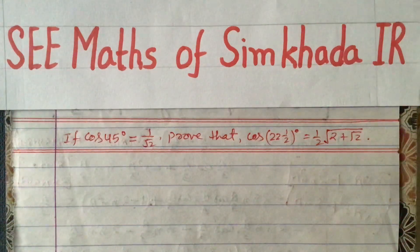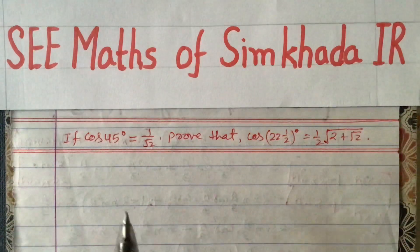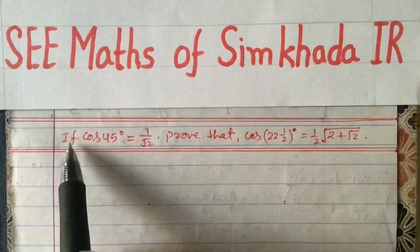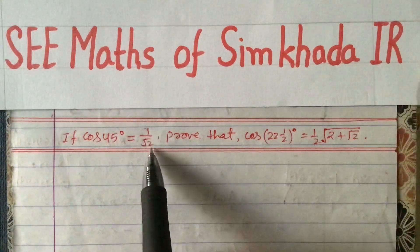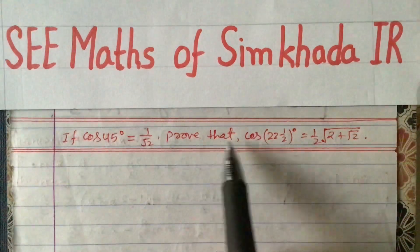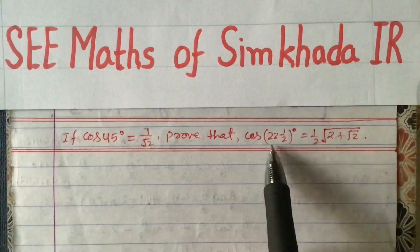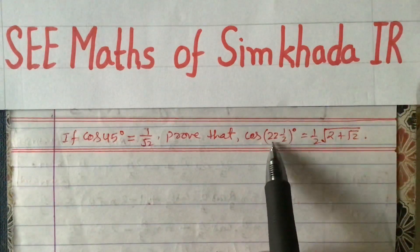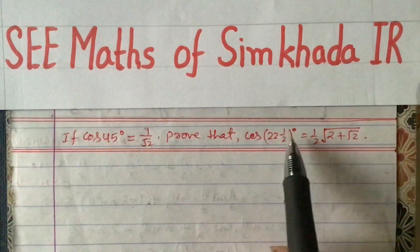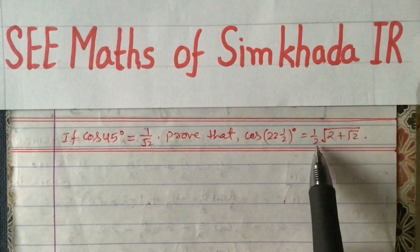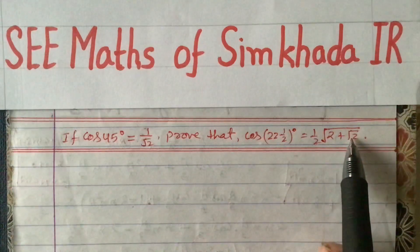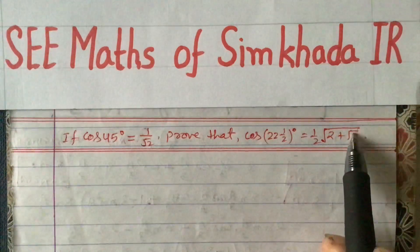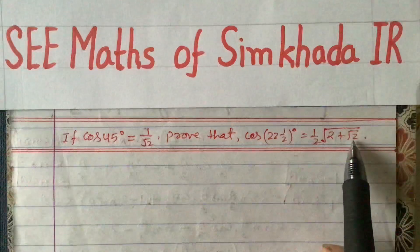Dear students, today I am going to teach you one question related to multiple and submultiple angles. The question is: if cos 45° equals 1/√2, prove that cos(22½°), that is 22.5°, equals (1/2)√(2 + √2). This is what we need to prove.